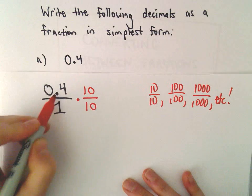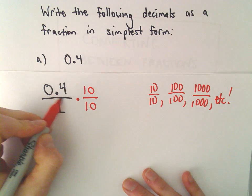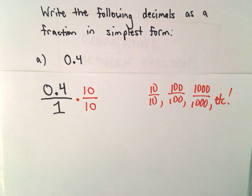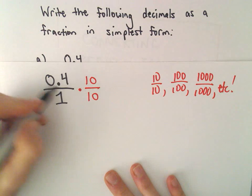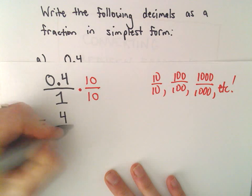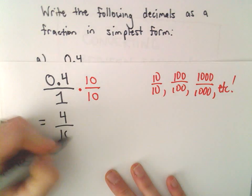So again, multiplying by 10 basically has the effect of moving the decimal place one to the right. Well, 0.4 times 10 then will be simply equal to 4. 1 times 10 is just 10.